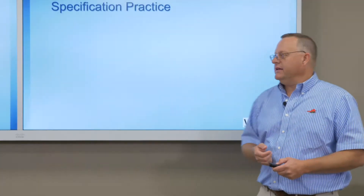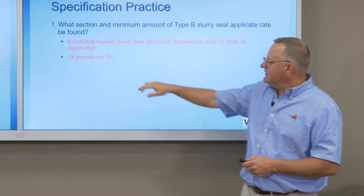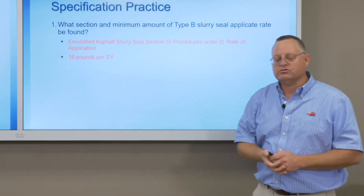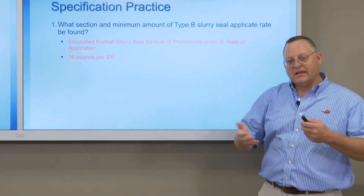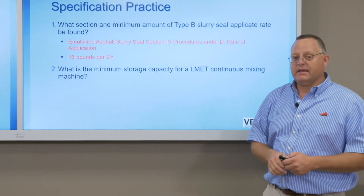Let's see how well you did. Where do we find it? First, look in the emulsified asphalt slurry seal special provision, section four under procedures, under D, rate of application. That's where you find the minimum amount of Type B slurry seal application rate. It says 16 pounds per square yard — that's the minimum application rate required.